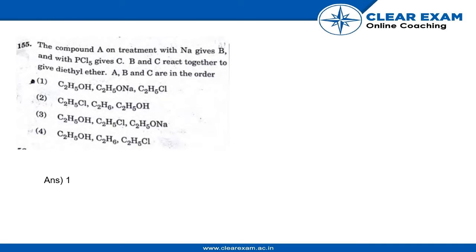Hey guys, now we are going to solve question number 155. Let's see what the question states. The compound A on treatment with Na gives B, and with PCl5 it gives C.